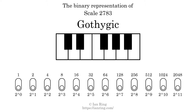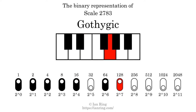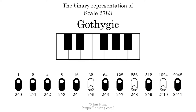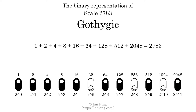The binary representation of this scale is determined by mapping tones of the scale to binary digits. Each binary digit represents a power of 2. To get the scale number, we add the powers of 2 together. The powers of 2 that are present in the scale, all added together, equals 2783. That is why the scale number, in decimal, is 2,783. The scale number not only enumerates the scale with a unique index, but it also literally describes the tonal content of the scale.